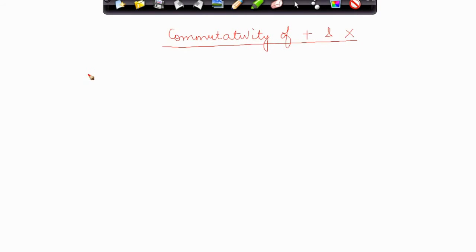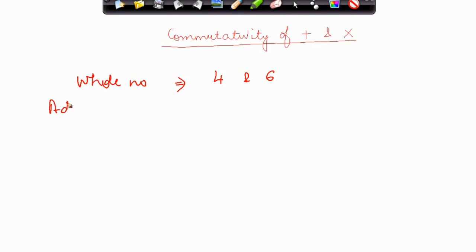Now what do you mean by this? What we mean by this is that suppose there are two whole numbers, let's say whole numbers 4 and 6, and I have to do an addition of these two whole numbers.